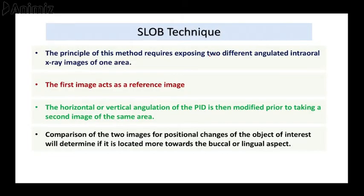The principle of the SLOB technique requires exposing two differently angulated intraoral x-ray images of one area. The first image acts as a reference image, and then the horizontal or vertical angulation of the position indicating device is modified prior to taking the second image. The two images are then compared for positional changes of the object of interest, which determines if it is located towards buccal or lingual.